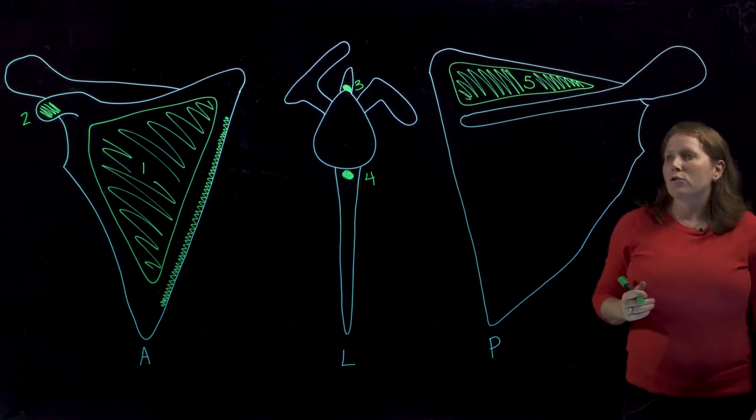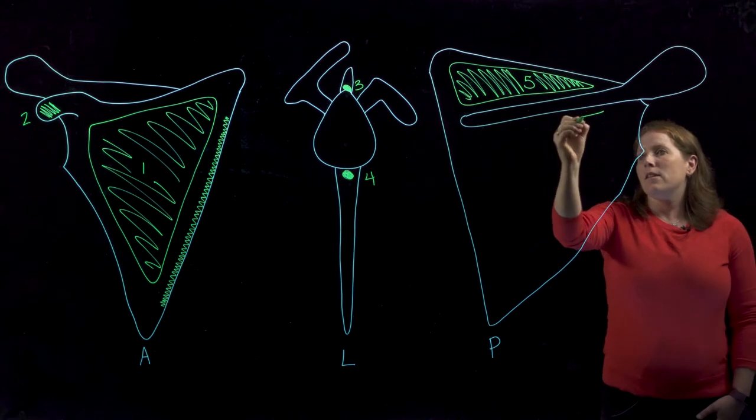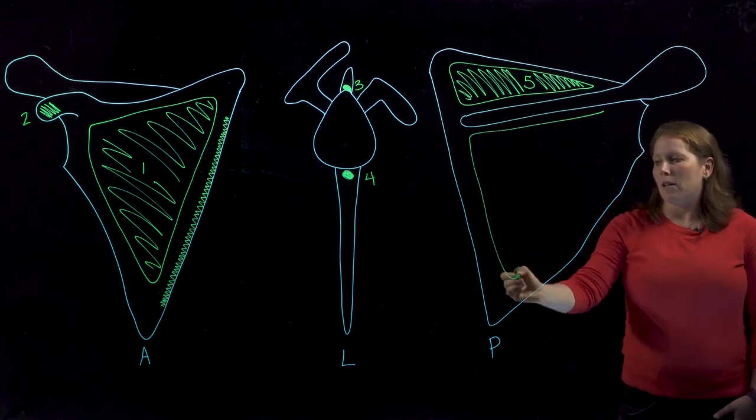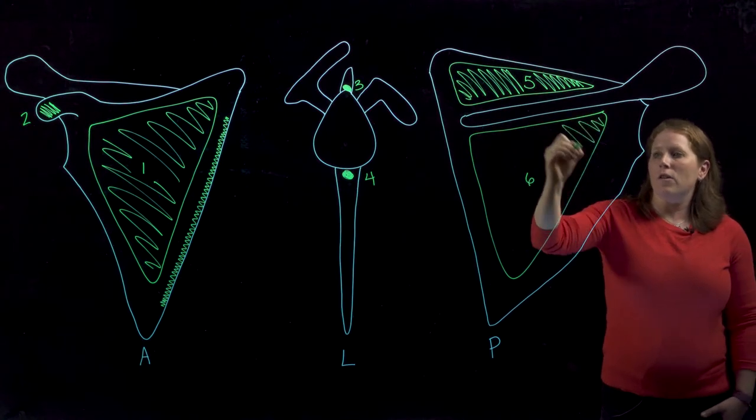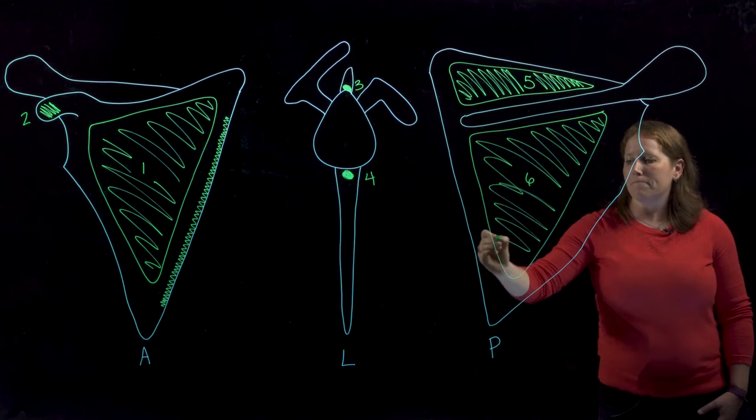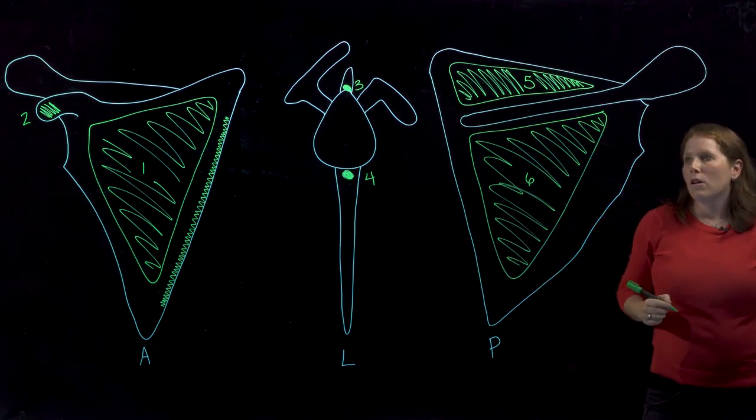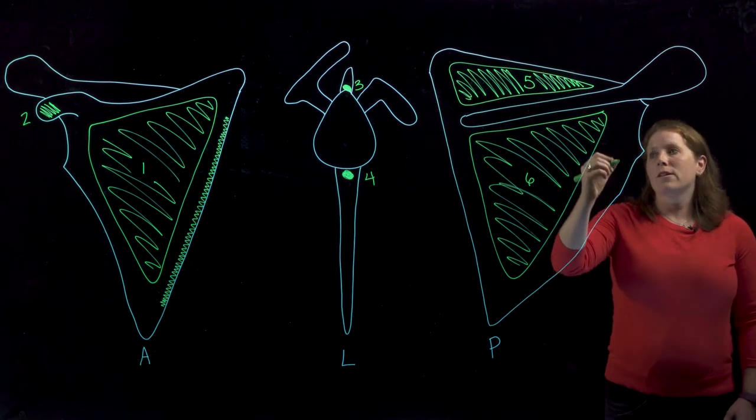We have this shallow depression, the supraspinous fossa, above the spine of the scapula. And inferior to the spine of the scapula, we have our infraspinous fossa for our muscle infraspinatus. We also have two muscles that will share an attachment site along the spine of the scapula and the acromion.